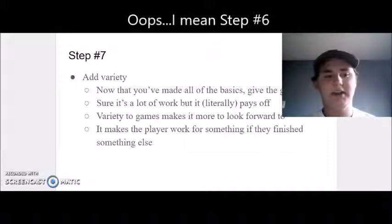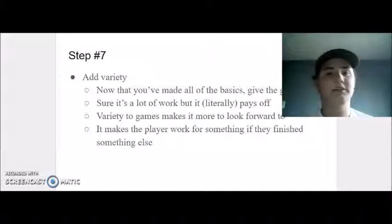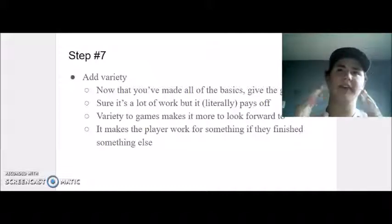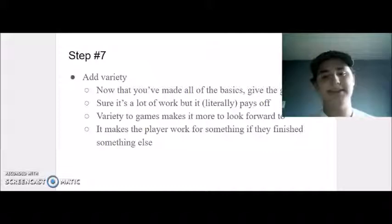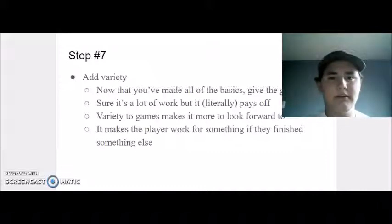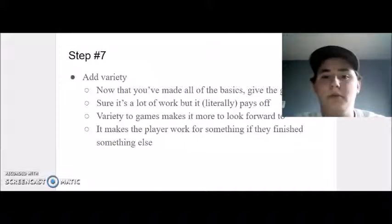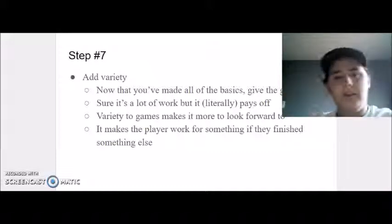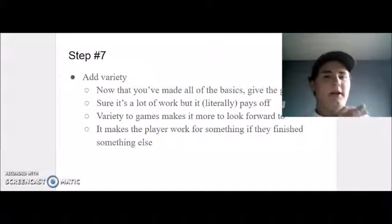Step 7: add variety. I cannot stress enough how super relevant this is when it comes to making video games. Variety makes everything so much more interesting. Add a bunch of stuff — yes, it will be a pain and it'll take a lot of work, but it will literally pay off. Because you get money. And it pays off. Now that you've got all the items, you can add variety to them — some are really, really powerful, and then there's a whole different variety that are just weak. Skyrim. Just make sure the player has something to work towards.